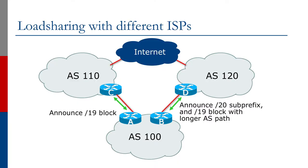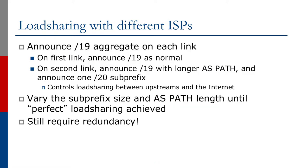If you look at the diagram, AS100 connects to AS110 and AS120 as before. We're going to announce a /19 aggregate out each link as before. What we're going to do now is apply some traffic engineering to the link between AS100 and AS120 - we take the /19 and pull out one /20 sub-prefix and announce that /20 on the link towards AS120. This means all traffic for that sub-prefix will come in through AS120.